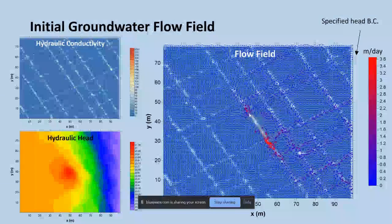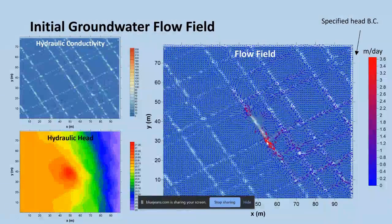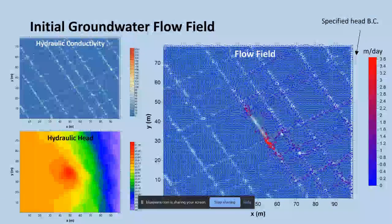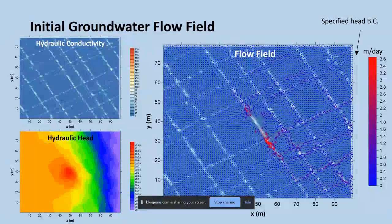We see flow heading away from the injection well in both directions along these fractures. The arrows turn and follow the other portions of the fracture network and the fluid makes its way to the boundary.